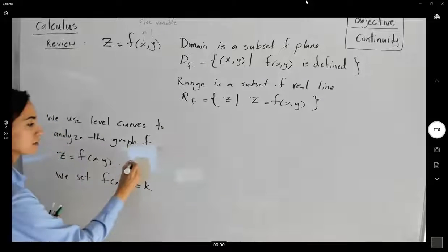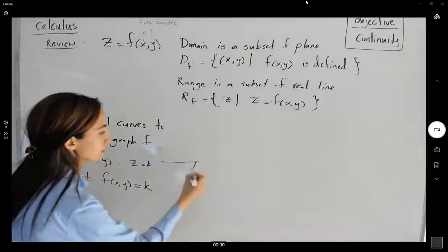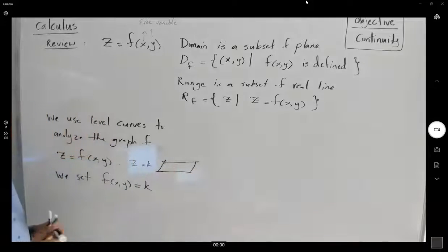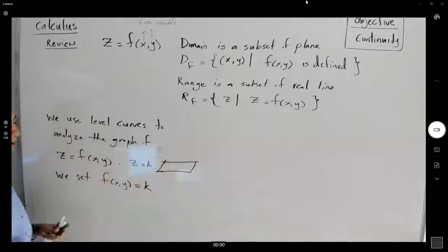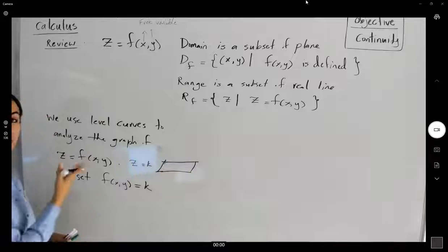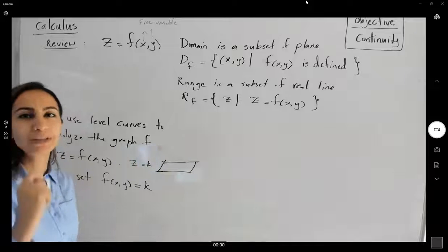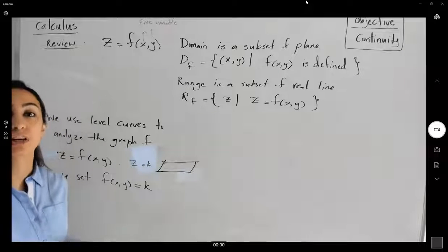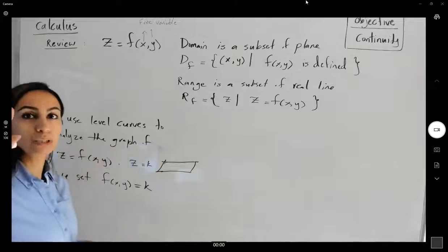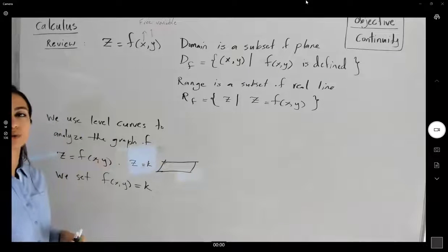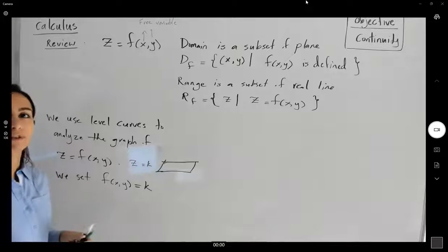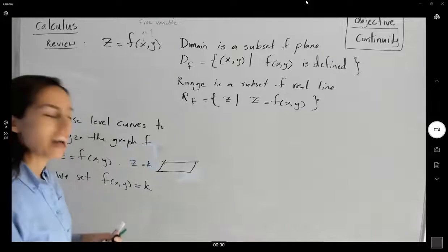Remember that z equals k are parallel planes in space. You slice the graph with these parallel planes and get an intersection between the plane and the surface in two dimensions. This gives us a general idea of the behavior of the graph in 2D, and we can use those level curves with paper and pencil to graph the function approximately.